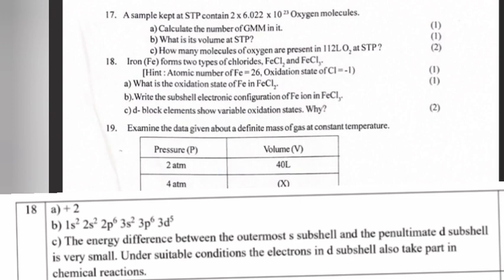Answer: A. +2. B. 1s² 2s² 2p⁶ 3s² 3p⁶ 3d⁵. C. The energy difference between the outermost S subshell and the penultimate D subshell is very small. Under suitable conditions, the electrons in D subshell also take part in chemical reactions.